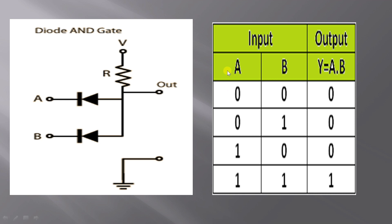If A is 1, that is high, and if B is 1, that is high, the output Y will also be high. In all the remaining cases, output is low.